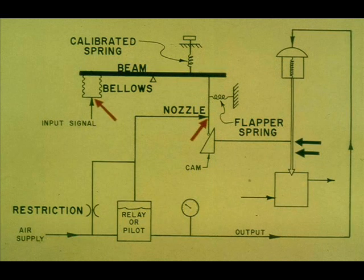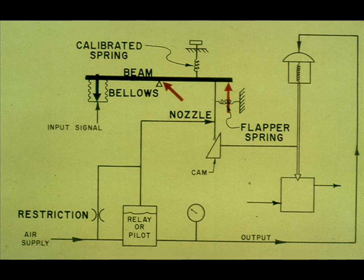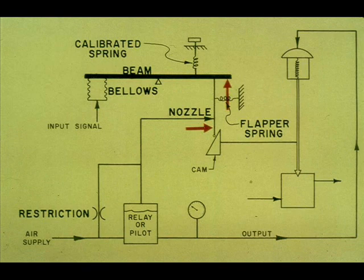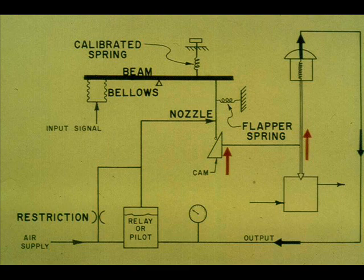The flapper nozzle relationship is restored, but there is a different air pressure in the input bellows and the valve stem has a new position. For a decreasing input signal, the opposite action takes place. The right-hand side of the beam moves upward, the flapper rides up the cam and away from the nozzle, the valve stem moves upward, forcing the flapper back toward the nozzle, and the flapper nozzle relationship is restored.